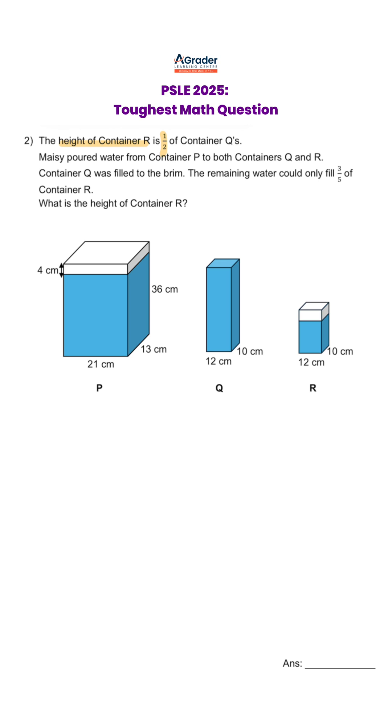The height of container R is half the height of container Q. Maisie poured water from container P to both containers Q and R. Container Q was filled to the brim, which means it's full, and the remaining water could only fill 3/5 of container R. The question is asking, what is the height of container R?